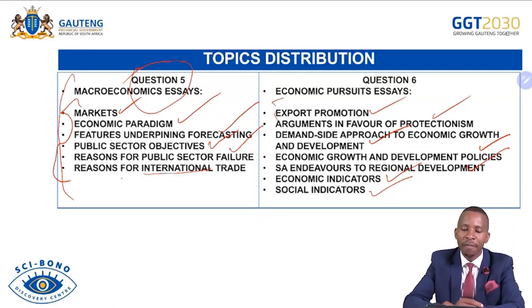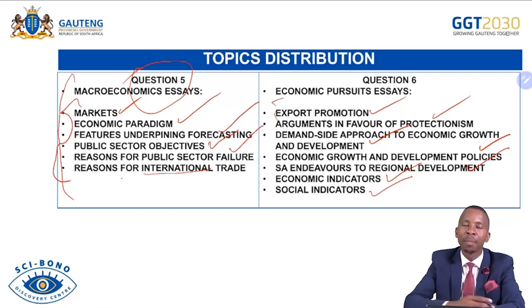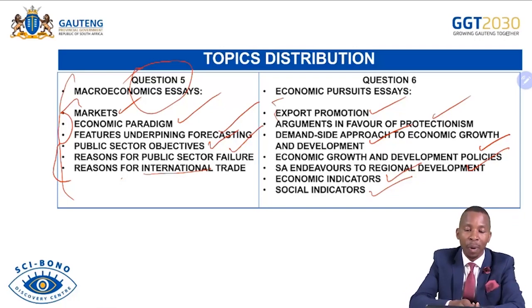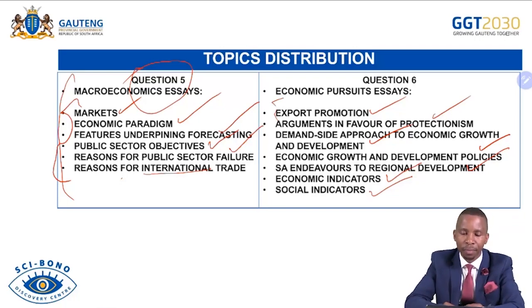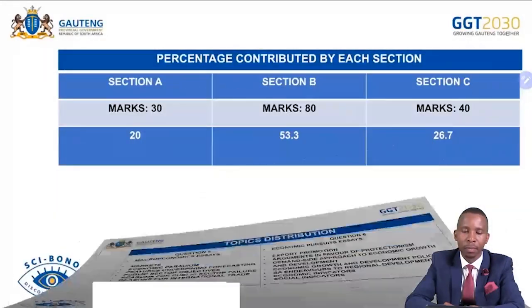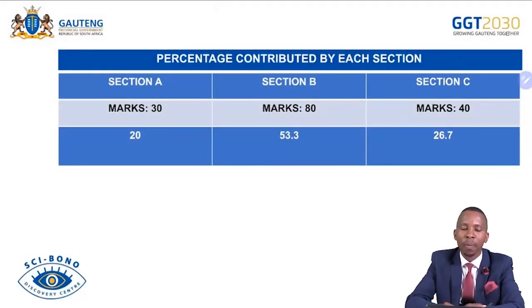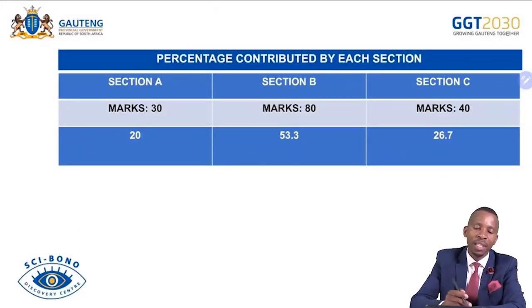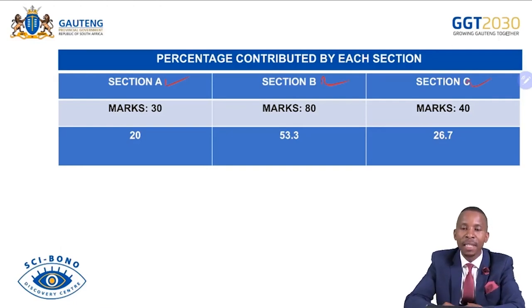Even parts of Section C can come as part of Section B, because not all topics will be questioned — there will be one from macro and one from pursuits. Within Sections A, B, and C, the percentage contributed by each section is important, and something you normally ignore.